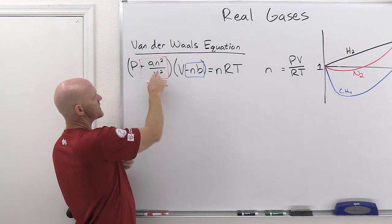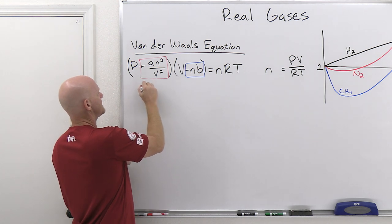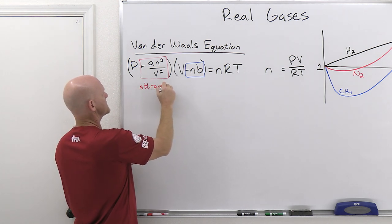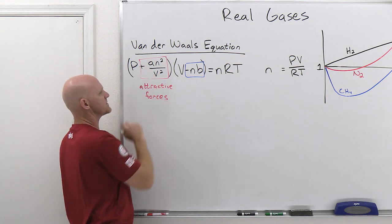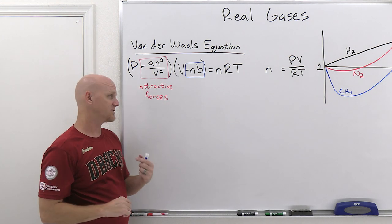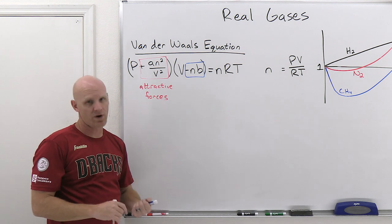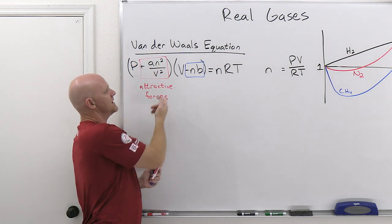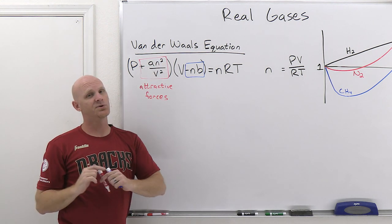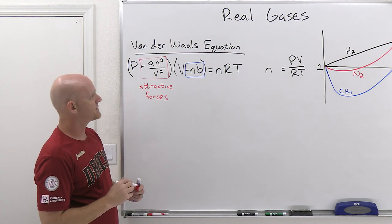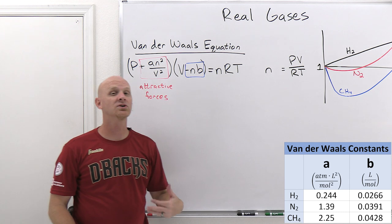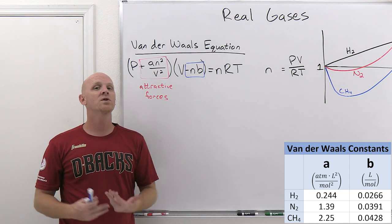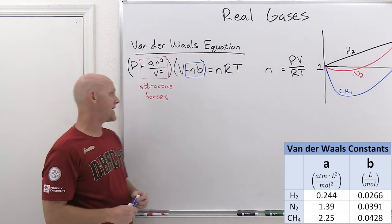This first term, this plus AN squared over V squared, that accounts for the attractive forces. A here is referred to as one of the Van der Waals constants. Notice if A equaled zero, well then this term would go away and you'd essentially have no attractive forces. We'll put a table of these Van der Waals constants up on the screen. What you find out is that the closer it is to zero, the more that gas behaves like an ideal gas.